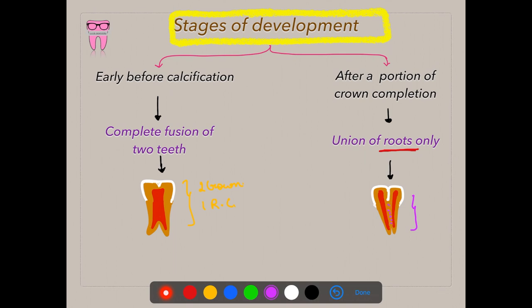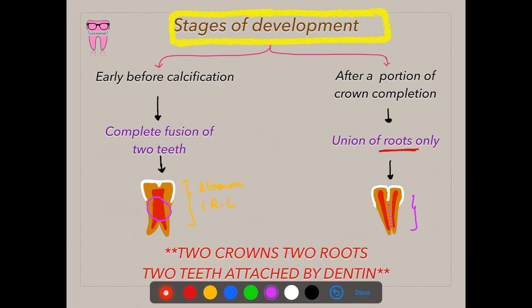Unlike early fusion, in late fusion the pulp chambers are separated by dentin — it's only fusion of dentin without involving the pulp chamber. In fusion, you will always find two crowns and two roots — that is, two teeth attached by dentin. Fusion is a developmental condition involving confluence of two teeth, merging through the dentin.